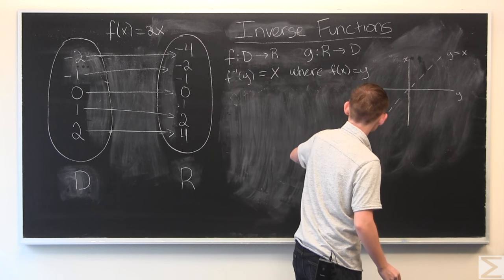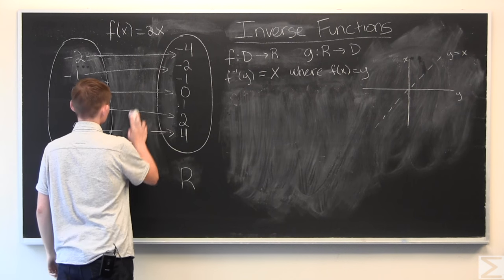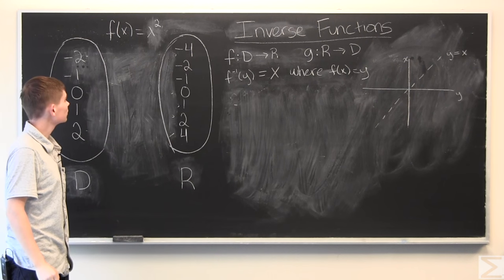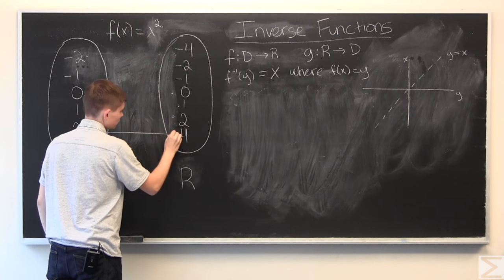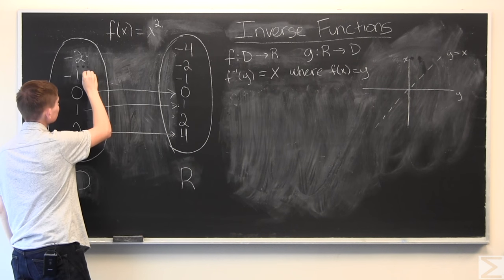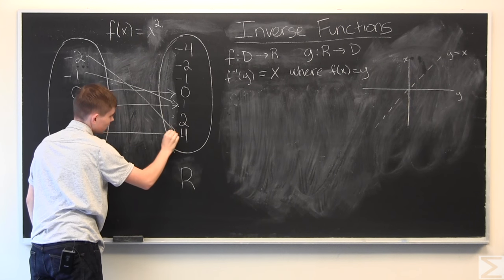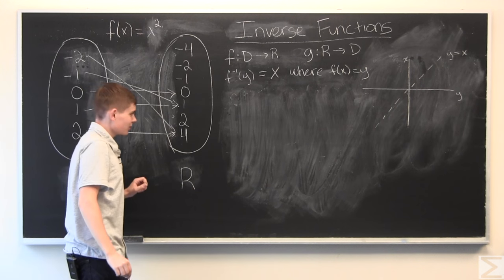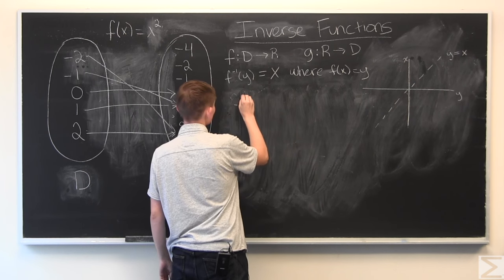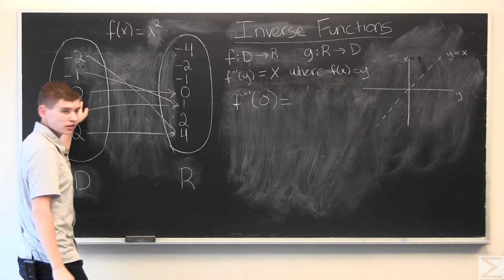All right. So, let's move on to a slightly more complicated function. Let's do the same thing with the original one, and let's start mapping. All right. So, 2 goes to 4. 1, when you square it goes to 1. 0 squared is 0. Negative 1, when you square that, you get positive 1. And negative 2, when you square that, you get positive 4. So, this is a slightly more complicated map, but let's see. So, let's take f inverse of 0. We find 0, map it back, and we get 0. So, that's fine.